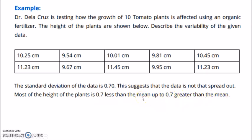Most of the height of the plants is 0.7 less than the mean up to 0.7 greater than the mean. So if we analyze it further, if the mean is, let's say if the mean is 10 centimeter, for example.